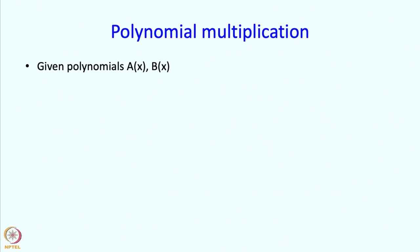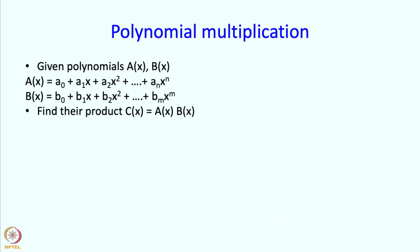So let us say we are given two polynomials, A and B. This is what A might look like: A0 plus A1 x plus A2 x square plus An x raise to n. And this is what B of x might look like, B0 plus B1 x plus B2 x square all the way till Bm x raise to m. In general, m may not be equal to n. We would like to find their product C of x equals A of x times B of x. So the product is going to look like this: there is going to be a constant term C0 plus C1 x plus C2 x square all the way till C m plus n x to the power m plus n. So there are going to be m plus n plus 1 coefficients.